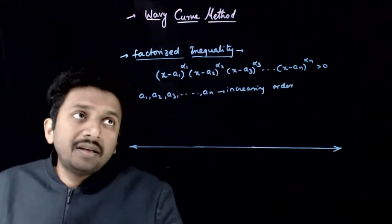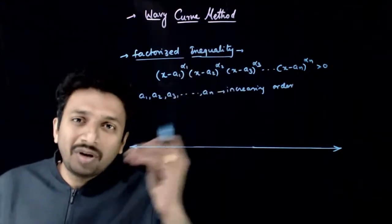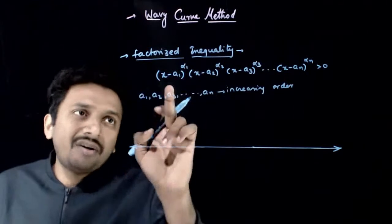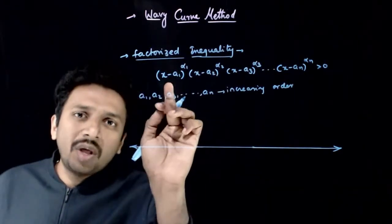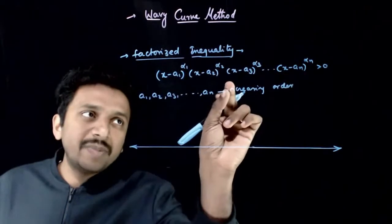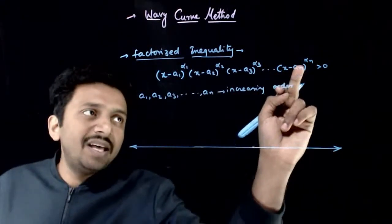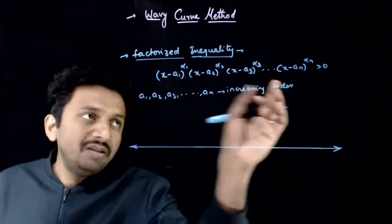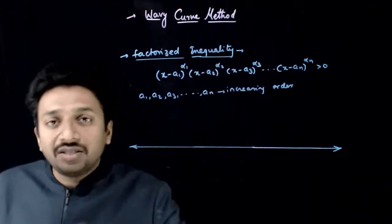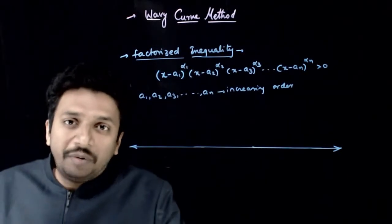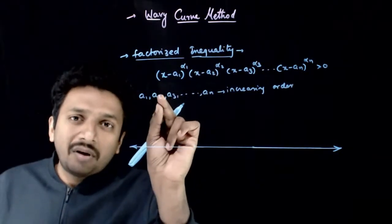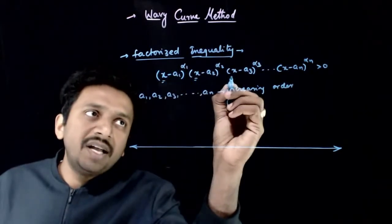Let us look at the concept of the Wavy Curve method more clearly. The Wavy Curve method is used to solve factorized inequalities of any power or degree. Suppose you have an inequality of the form (x minus a1)^α1 · (x minus a2)^α2 · (x minus a3)^α3 … (x minus an)^αn, where a1, a2, a3 up to an are in increasing order. The first step is to identify all critical points after making all leading coefficients positive.